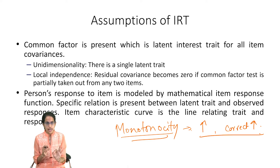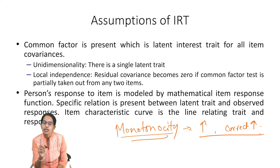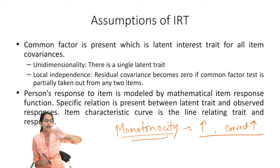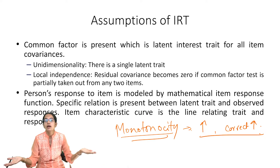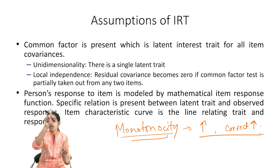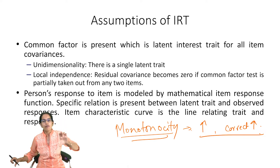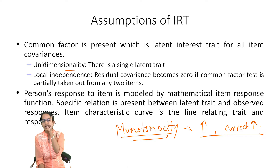The second assumption is unidimensionality. One dominant trait is present. Let's say we do the same example — four persons and four items. One dominant hidden trait is there, which is the difficulty level of the questions. If we are not taking that into account, we might say both person 2 and 3 are at the same score and equally proficient. But as soon as we factor in item difficulty, person 2's score is relatively better than person 3's because the two items person 2 answered were relatively more difficult.